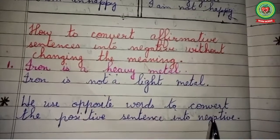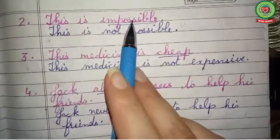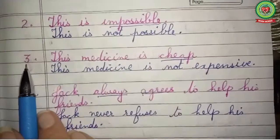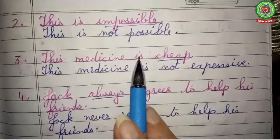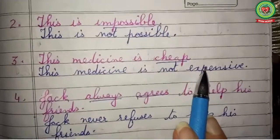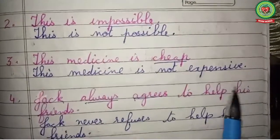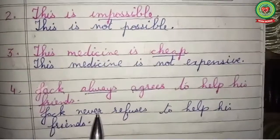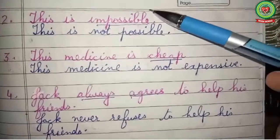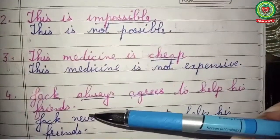We use opposite words to convert the positive sentence into a negative sentence. Number two: 'This is impossible' becomes 'This is not possible.' Number three: 'This medicine is cheap' becomes 'This medicine is not expensive.' Number four: 'Jack always agrees to help his friends' becomes 'Jack never refuses to help his friends.' We use opposite words and add 'not' or 'never' before them.